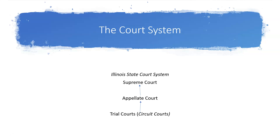Factual disputes are resolved by the trier of fact — the judge or the jury at the trial court level. The appellate courts decide whether legal mistakes in applying the law occurred at the lower court so as to require a different outcome. Those different outcomes can be reversal, remand, or otherwise.